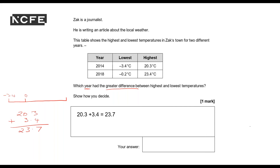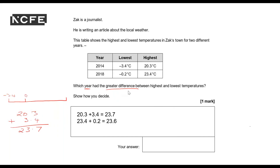For the next year, it's 23.4 plus 0.2. I'm not going to use column addition because it's quite straightforward — I just need to add on 0.2, so it's 23.6. The greater difference, which is what the question is asking, is 2014. That's my answer: 2014. I've shown my working, so I'm happy with that.